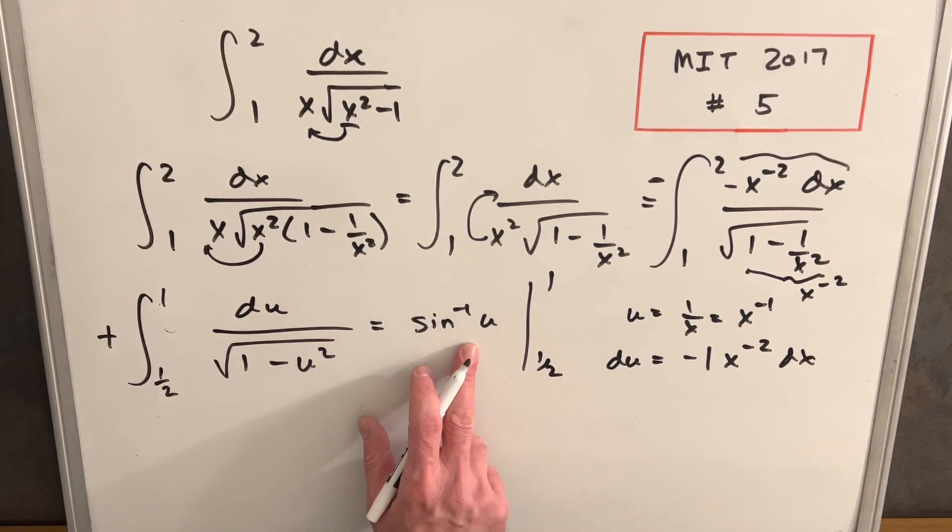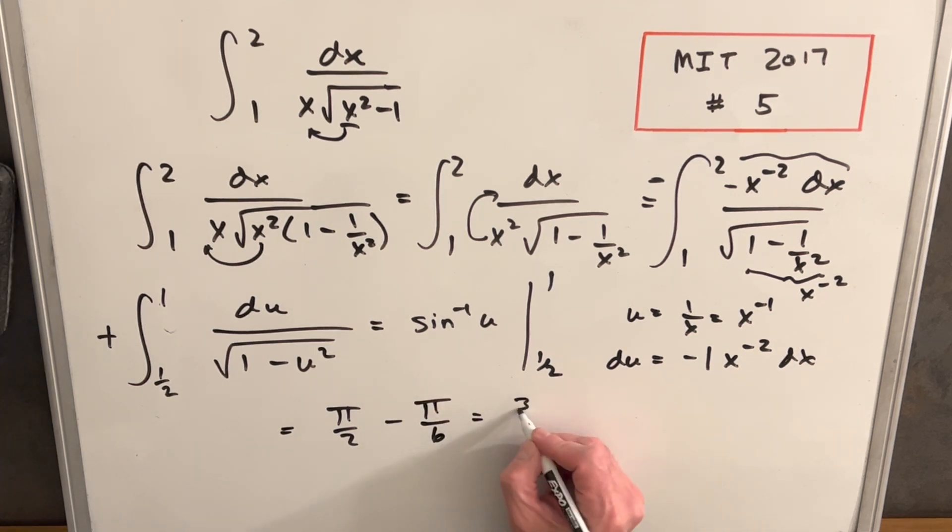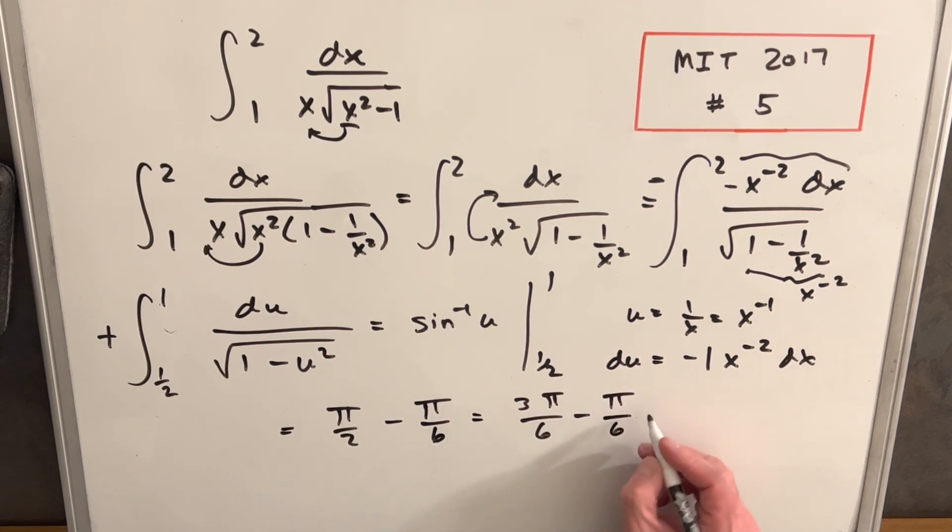Then we can just evaluate this. So the sine inverse at one, that's going to happen at pi over two. So that'll be our first piece. And sine inverse at a half is going to be pi over six. Then we can just get a common denominator. So we'll write this as three pi over six minus pi over six. And this is actually going to be, for our answer, pi over three.